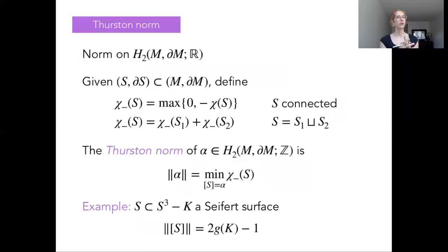So I want to, in this setting of sutured manifolds, give a more combinatorial or algebraic way of understanding this notion of tautness. And to do so, I first need to define the Thurston norm, which is actually a semi-norm on the second homology of M relative to the boundary.